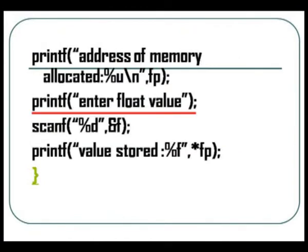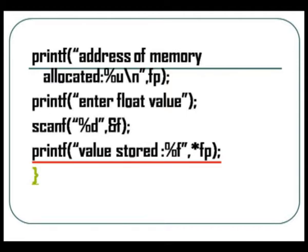Then we are entering a float value, we are accepting that value. And now we want to see the value that is stored at that address. That is why here we are simply using the variable fp to get the address. Here we are using pointer fp to get the value.